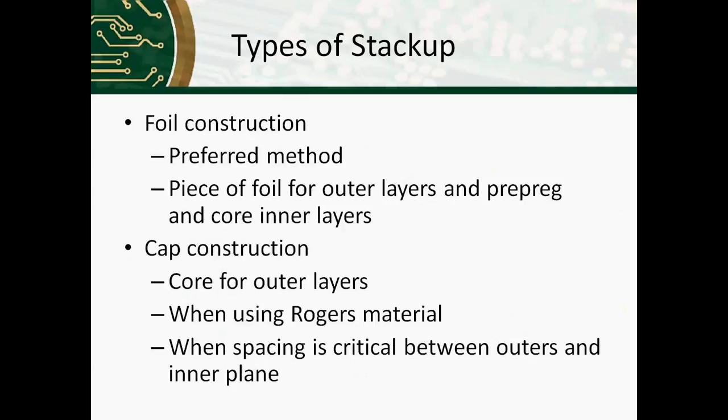I referred to two different types of stack-ups earlier, the foil and the cap. Foil is what we standardly use and it's our preferred method. That is a piece of foil that is used for the outer layers, backed by prepreg and then core inner layers. Cap construction is where you use core for the outer layers so that one and two are in the same piece of material, then three and four with prepreg in between there. This is used when you're using Rogers material and is also when spacing is critical between the outers and the inner plane because you can hold a much tighter tolerance with one piece of core material than you can with prepreg. Both these can be freely used and we prefer that not to be called out unless required within your design.